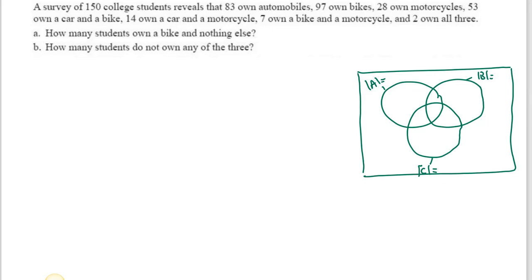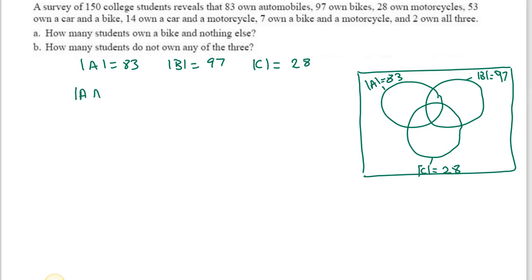Here's another example with three sets. A survey of 150 college students revealed that 83 own a motorcycle (set C), 97 own a bike (set B), 53 own a car and a bike so |A∩B| = 53, 14 own a car and a motorcycle so |A∩C| = 14, and 7 own a motorcycle and a bike so |B∩C| = 7.